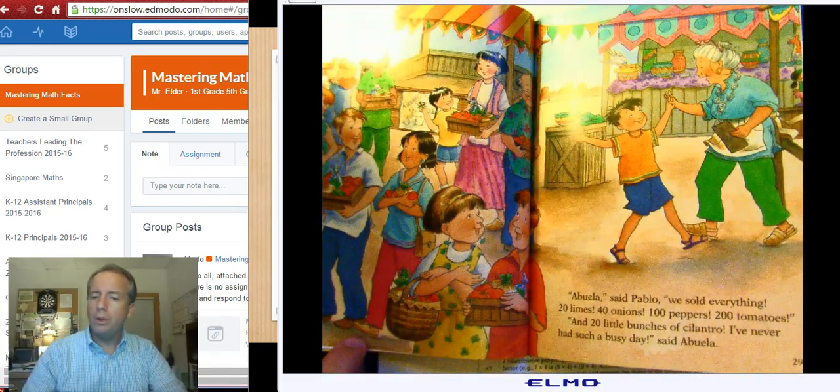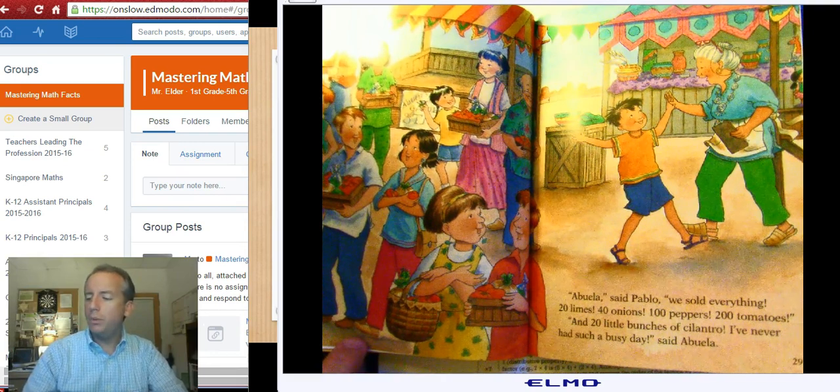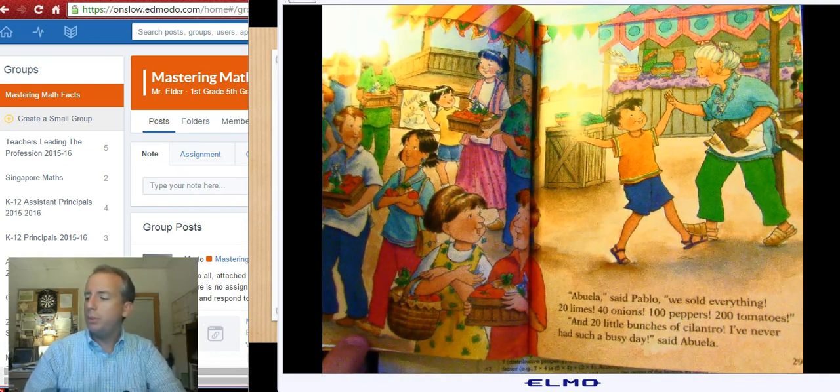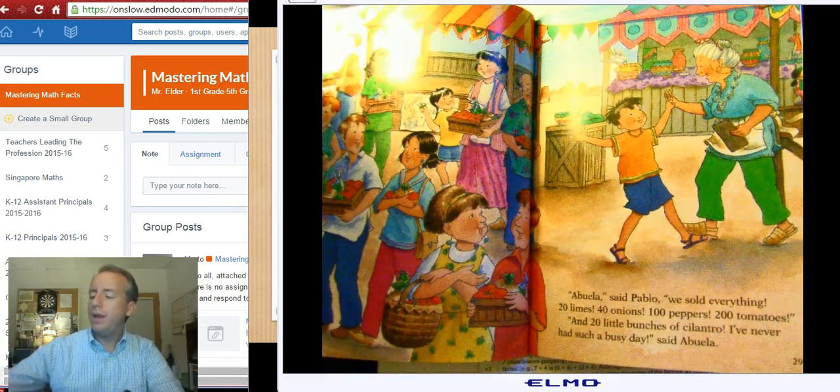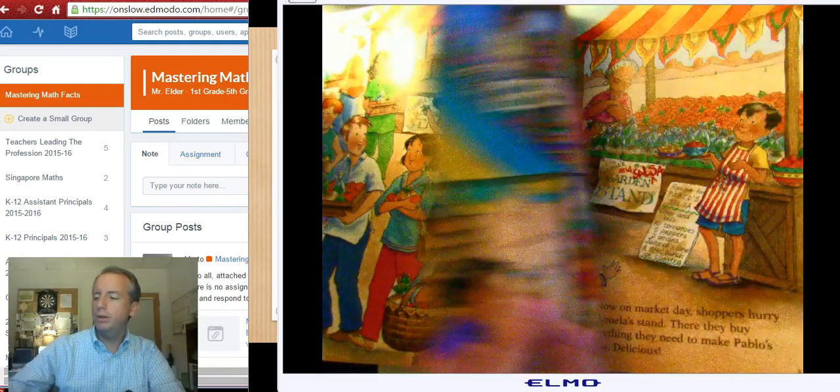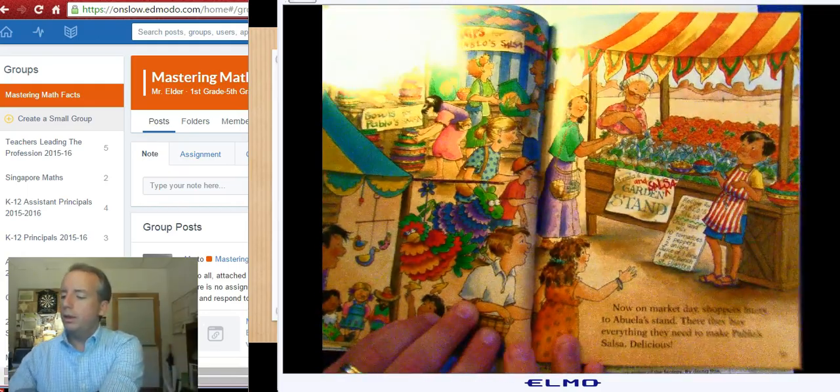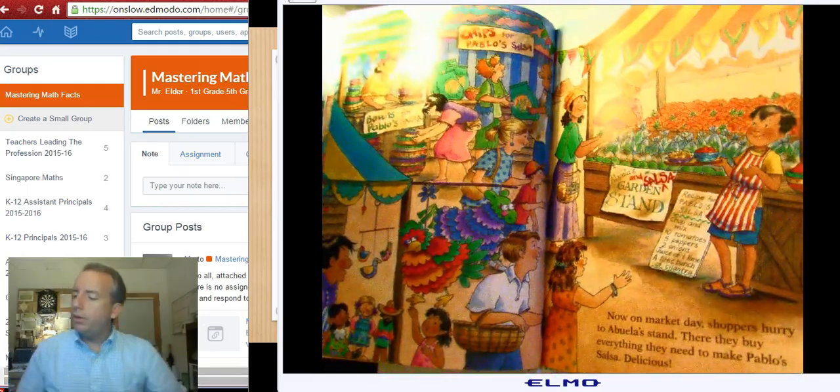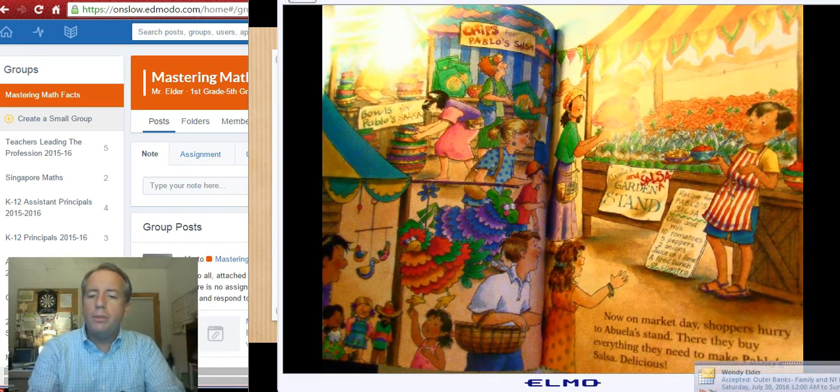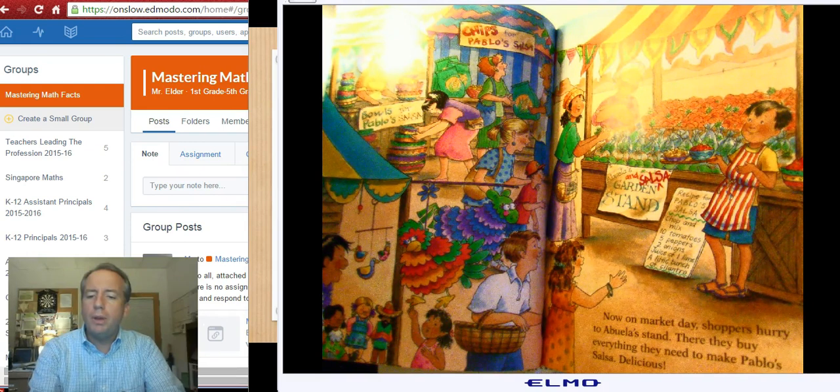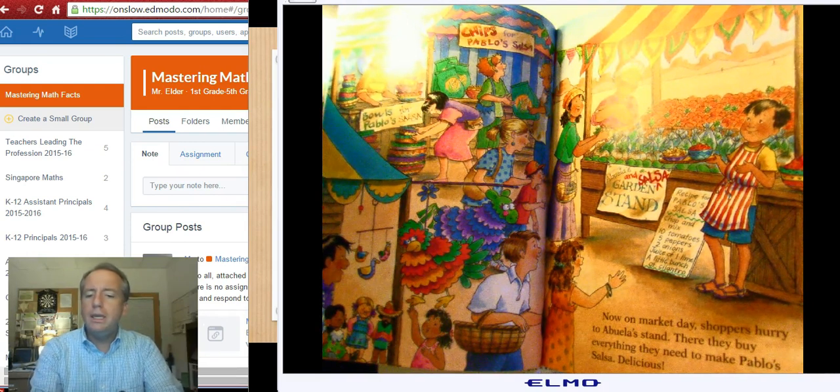Abuela, said Pablo. We sold everything. Twenty limes, 40 onions, 100 peppers, 200 tomatoes, and 20 little bunches of cilantro. I've never had such a busy day, said Abuela. Now on the market day, shoppers hurry to Abuela's stand. There they buy everything they need to make Pablo's salsa. Delicious.